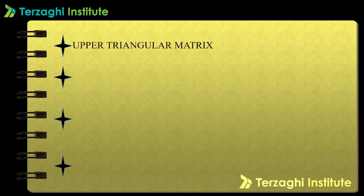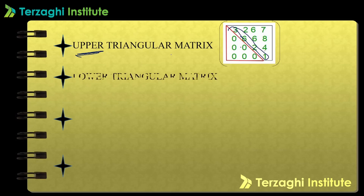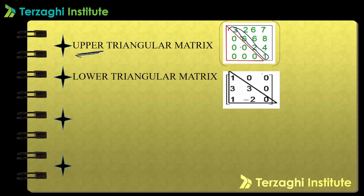Upper triangular matrix: in this matrix, the elements above the leading diagonal are present, and the elements below the leading diagonal are zero. Lower triangular matrix: the elements below the leading diagonal are present, and the elements above the leading diagonal are zero.